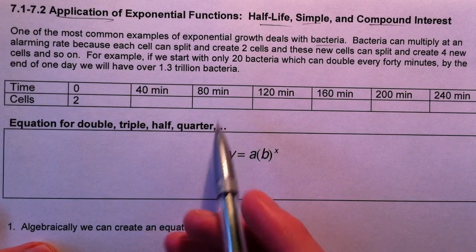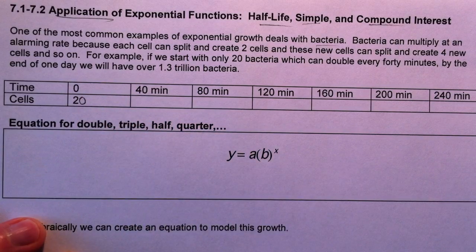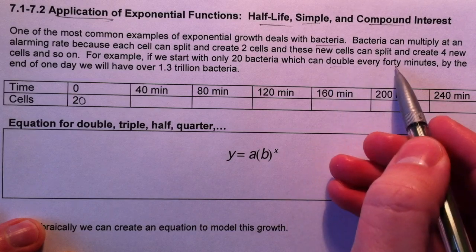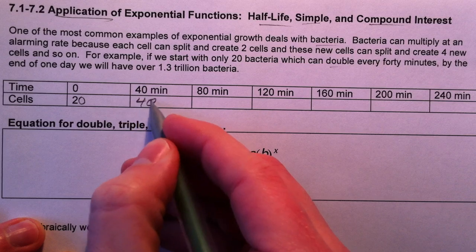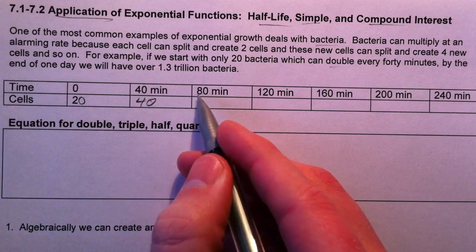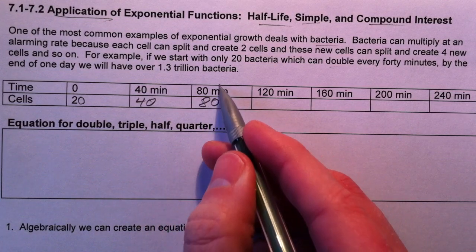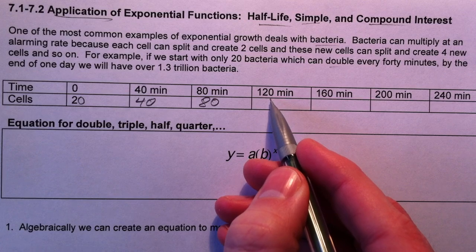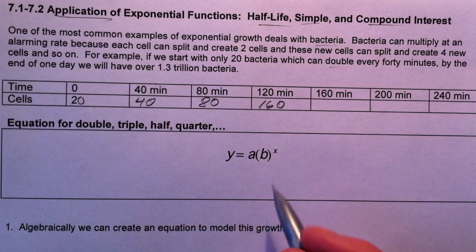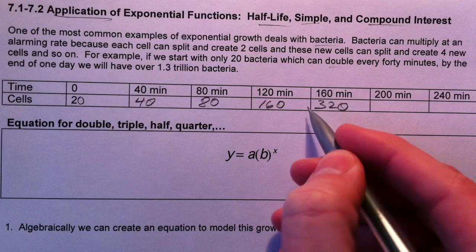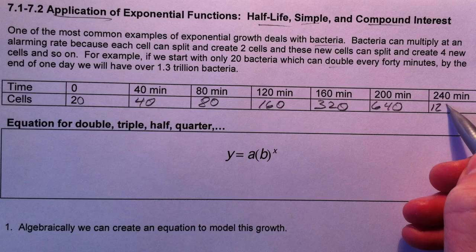Let's assume that at time zero we have 20 bacteria cells. Since they double every 40 minutes, after 40 minutes we have twice as many: 40. After another 40 minutes it doubles again to 80. After another 40 minutes — 120 minutes total — we have 160 cells. Then 320, then 640, then 1280.